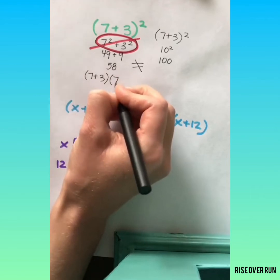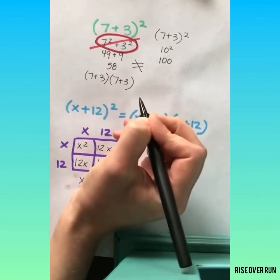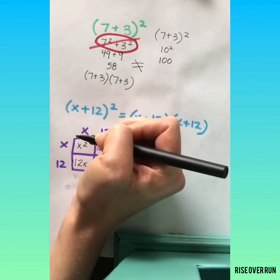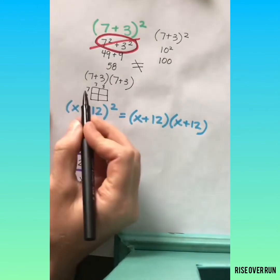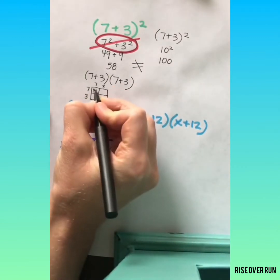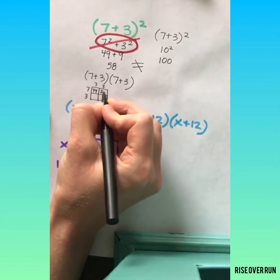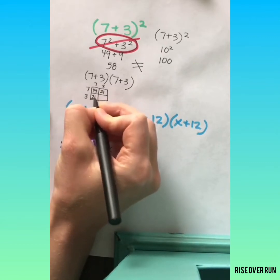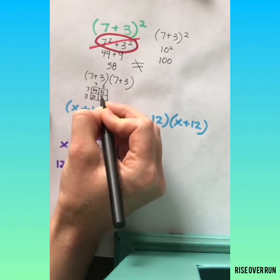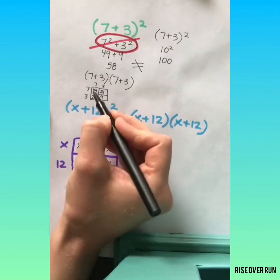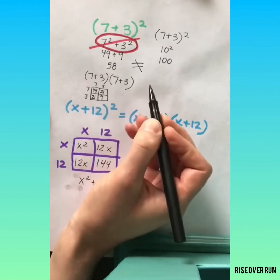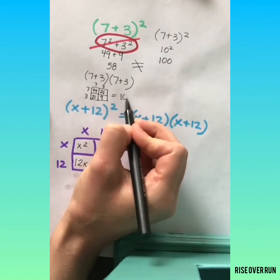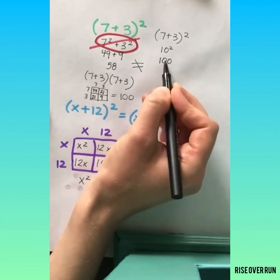Let's back up and see how this would have worked with this number up here. 7 plus 3 times 7 plus 3. We could distribute or do a box method here. 7 times 7, 49. 7 times 3, 21. 7 times 3 is 21. 3 times 3 is 9. Now if we add all of these up in here we'll get a total of 100. Which is what we wanted.